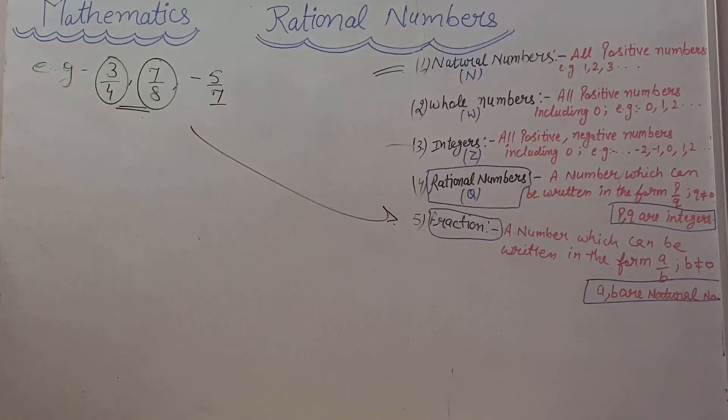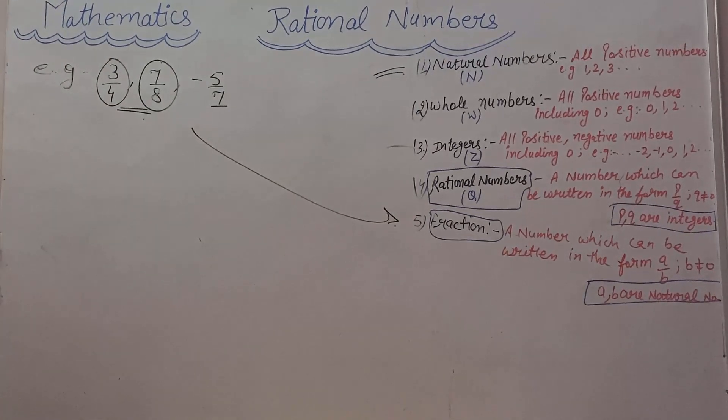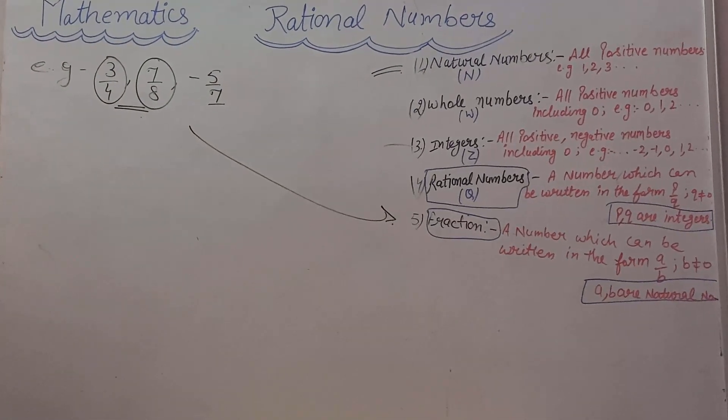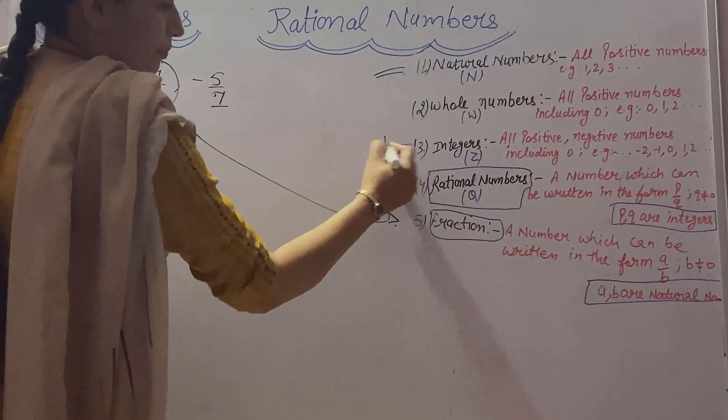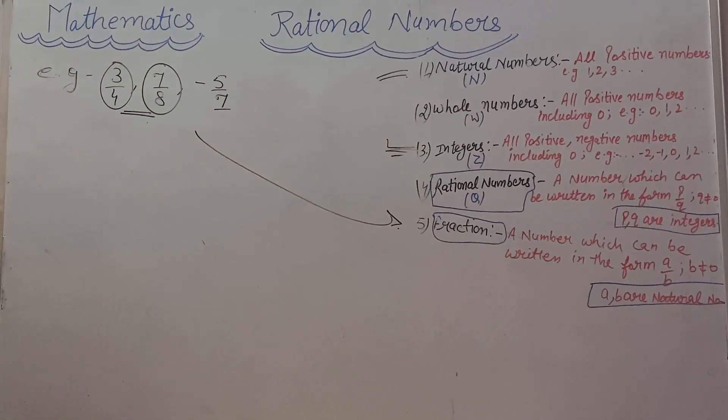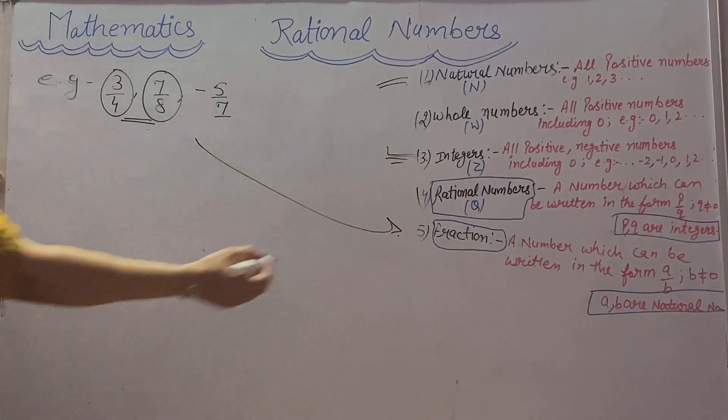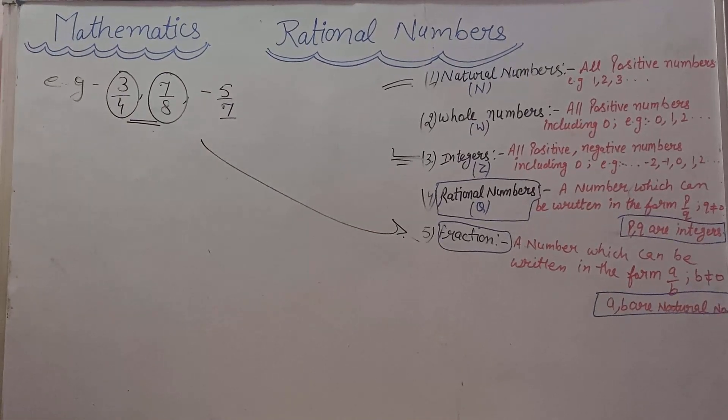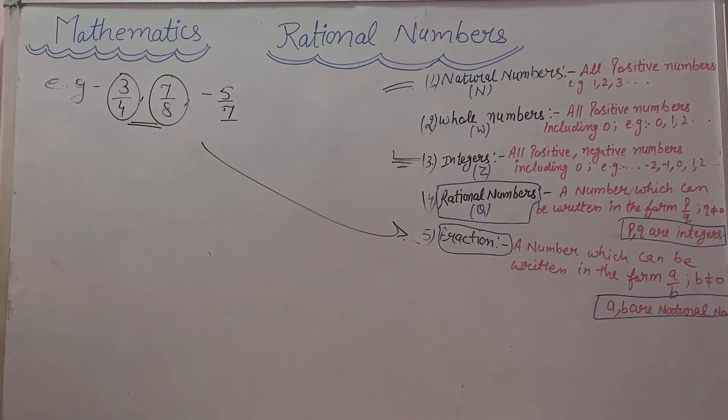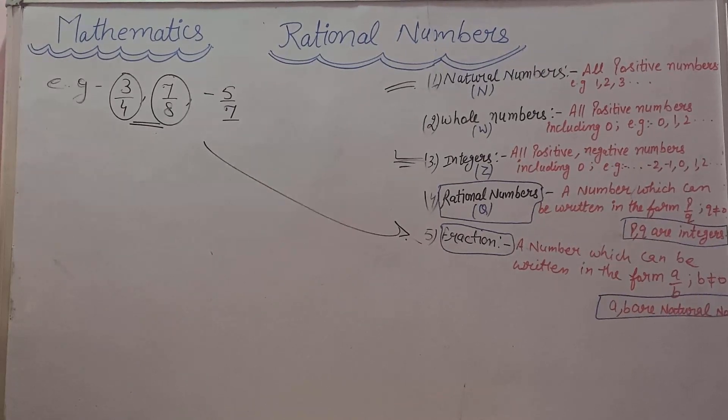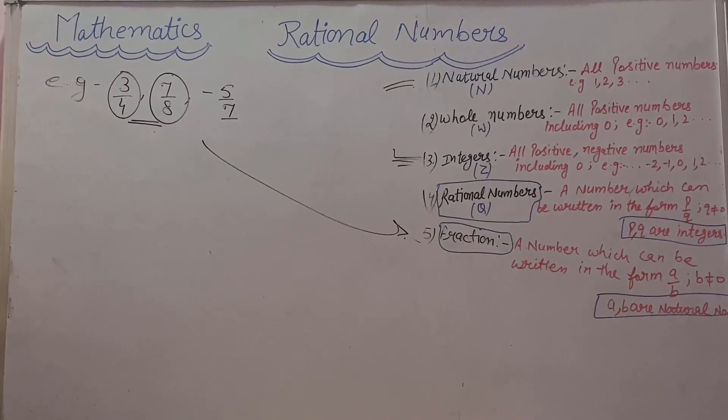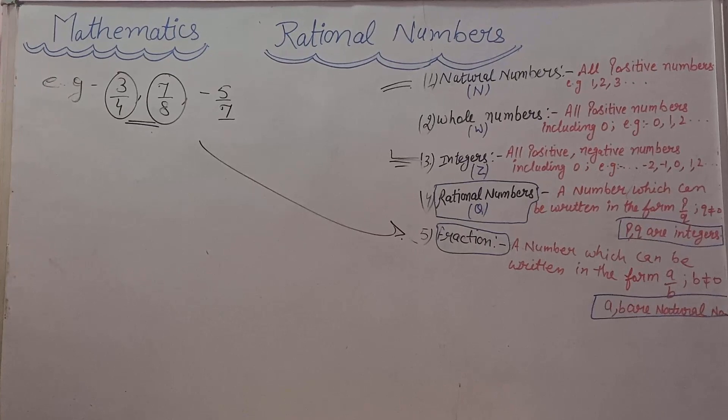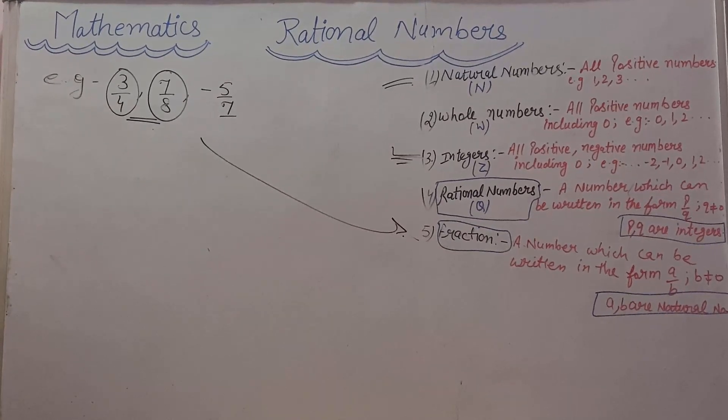And in the rational number P, Q, that is numerator and denominator are integers. Now all the fractions are positive and rational numbers can be negative. And all the fractions are also rational numbers but it is not necessary that all the rational numbers are also fractions.